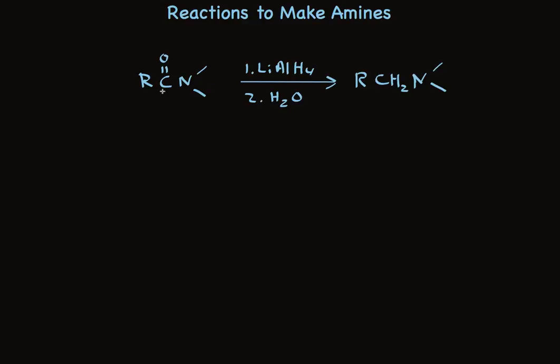There's another reduction using lithium aluminum hydride that also makes amines. When amides are treated with lithium aluminum hydride and then water, you make amines. You always have the CH2, but it isn't necessarily a primary amine. You can have alkyl groups, aryl groups, hydrogen attached, so this gives you a lot more flexibility about the structure. Primary, secondary, or tertiary amines are products.